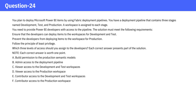Each correct answer presents part of the solution. A: Build permission to the production semantic models. B: Admin access to the deployment pipeline. C: Viewer access to the development and test workspaces. D: Viewer access to the production workspace. E: Contributor access to the development and test workspaces. F: Contributor access to the production workspace.